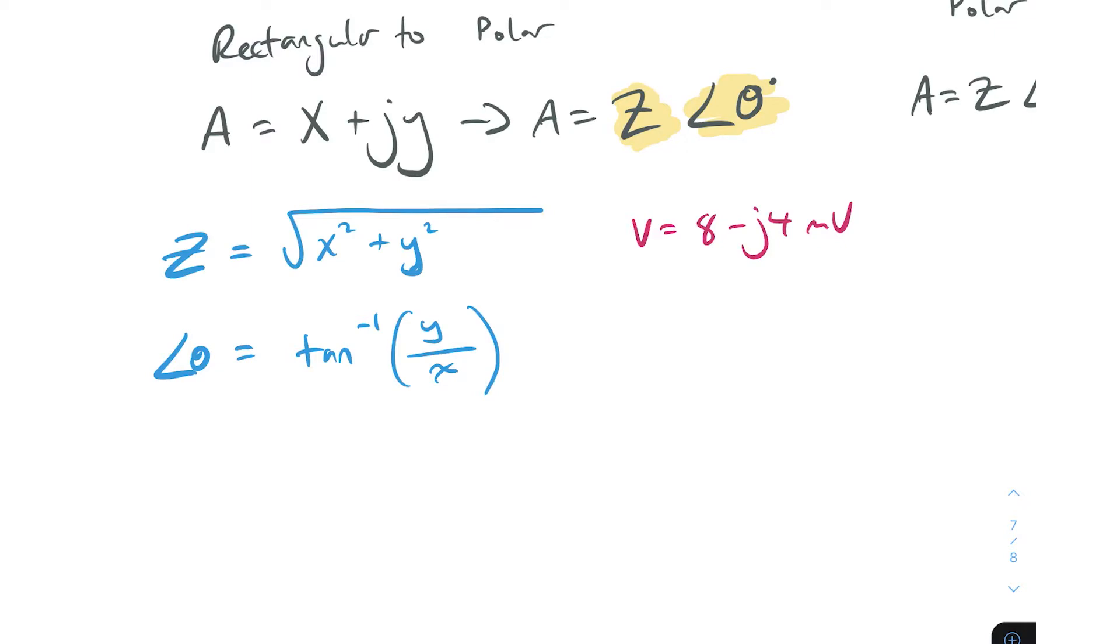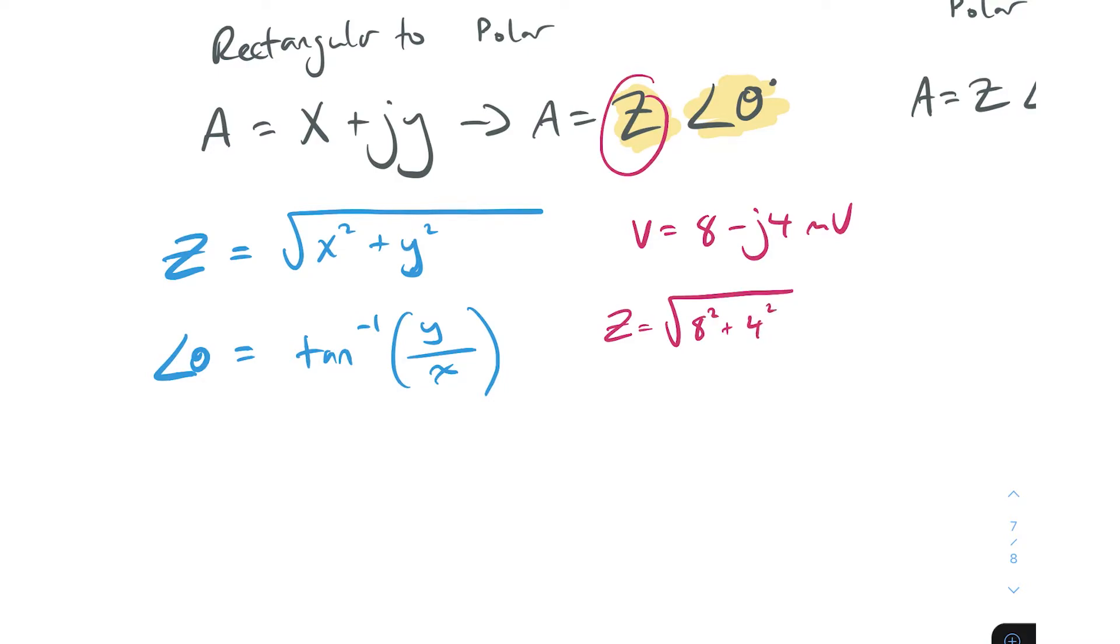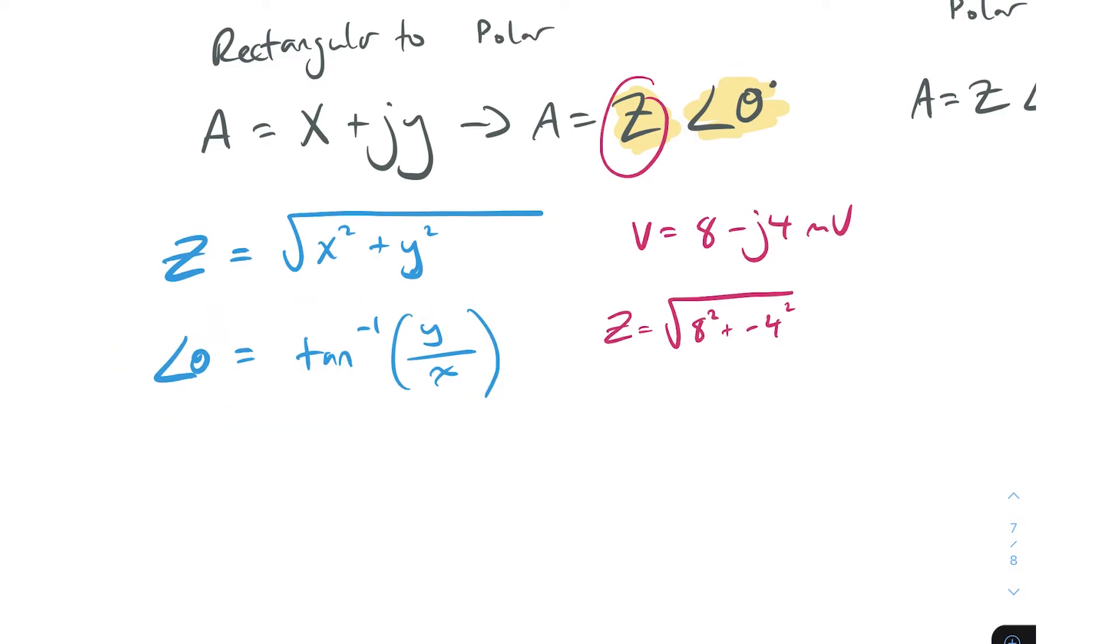We want to convert that into polar format so we can see what would be its true value plus the phase shift of the voltage. What we do is say our Z component is equal to the square root of 8 squared plus 4 squared. Our y component here is 4, you just ignore the j. Some people will write minus 4 here and that's okay. The minus is important because it's minus j4 not plus j4. When it comes to squaring and square rooting it doesn't matter whether it's minus or plus, but it will matter when we convert for our angle.